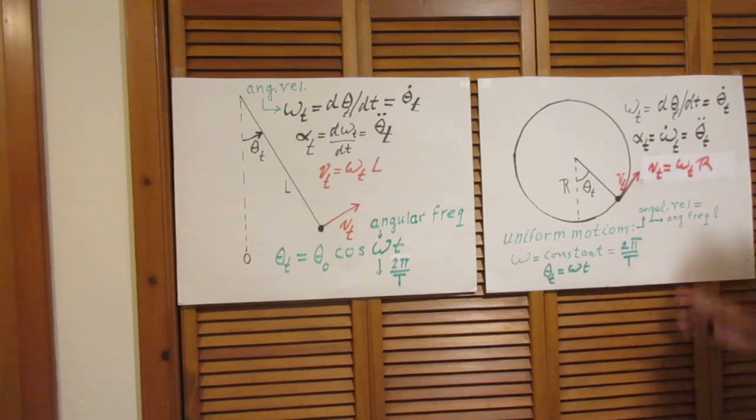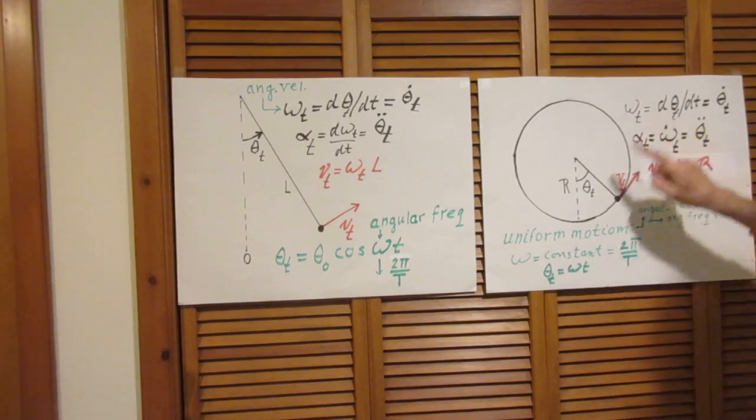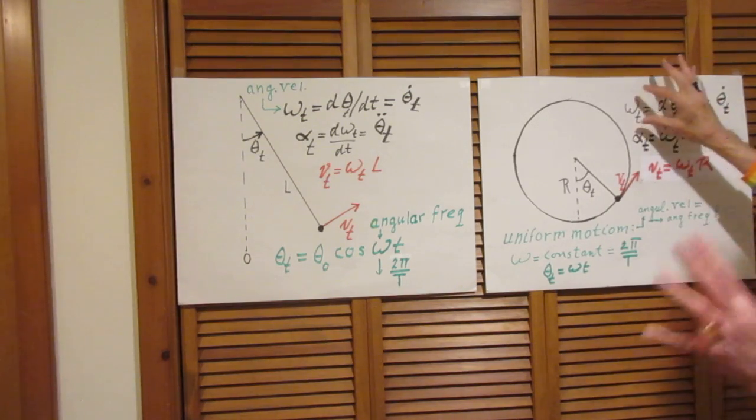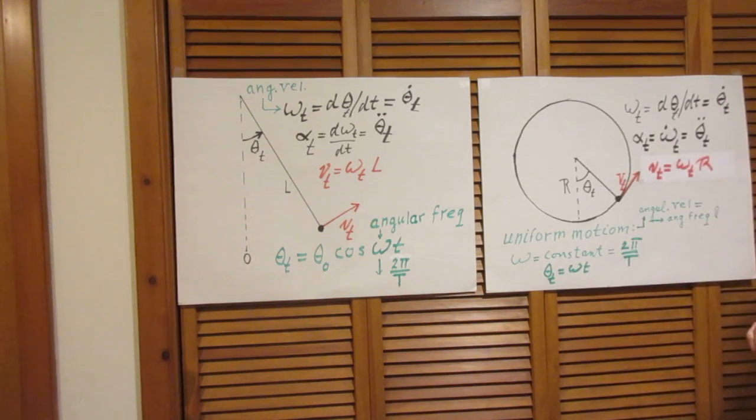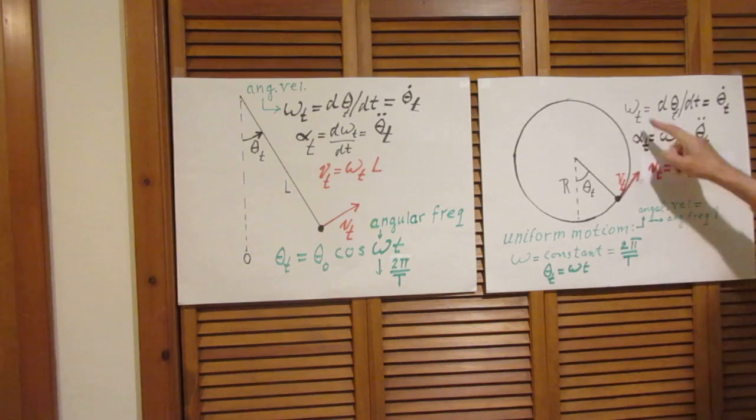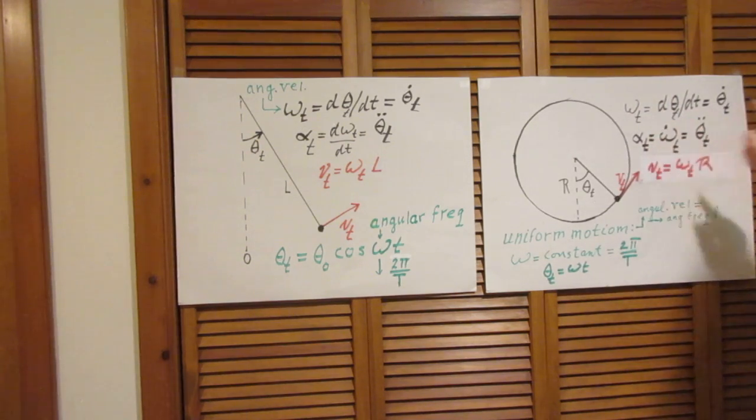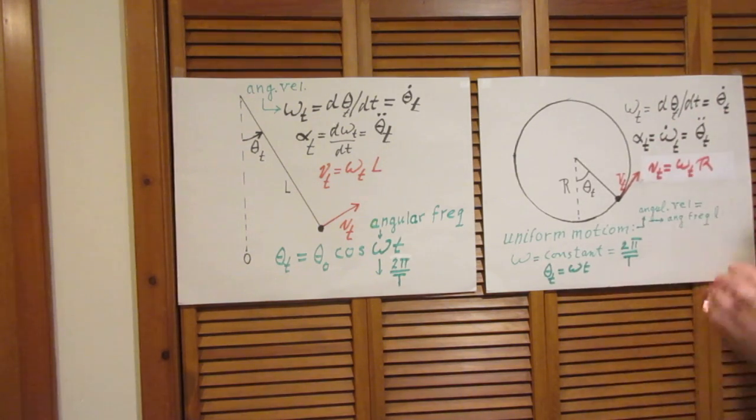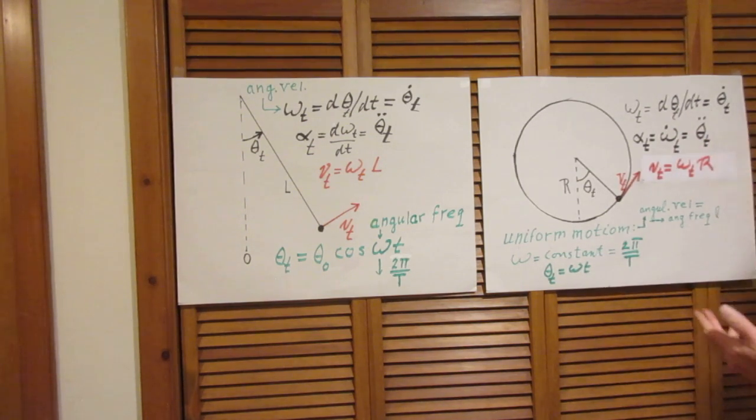Totally reasonable to call omega t the angular velocity in this case, just as we did with the pendulum. It is the change in angle per time unit, its radians per second, for which we write theta dot. It's totally reasonable to call the angular acceleration alpha, just like we did with the pendulum, and to call that omega dot. It's d omega dt. It's also theta double dot, totally reasonable.